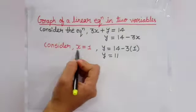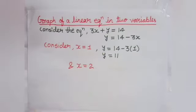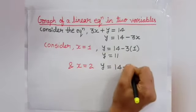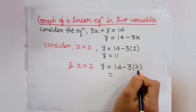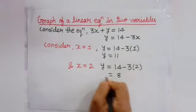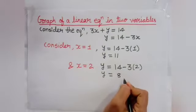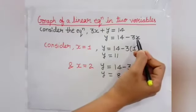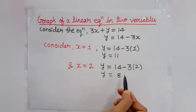अब अगर हम x = 1 की जगह x = 2 consider करें, तो हमें y की एक value मिलेगी। y = 14 − 3×2 = 14 − 6 = 8। तो x = 2 के लिए हमें y = 8 मिला। इसी प्रकार से, जब हम x की कोई भी value इस equation में put करेंगे, तो हमें उसके corresponding y की एक value मिलेगी।